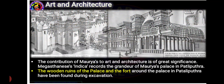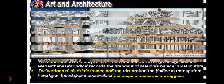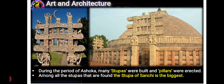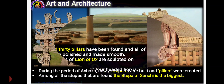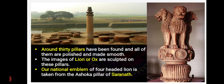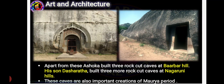Regarding art and architecture, wooden palaces and forts were built, and many stupas and pillars were erected. The stupa at Sanchi is the biggest one. Around 30 pillars have been found, with images of lions or oxen sculpted on them. Our national emblem of the four-headed lion is taken from the Ashoka pillar at Sarnath. Ashoka built three important rock-cut caves at Barabar Hills, and his son Dasharatha built three more rock-cut caves at Nagarjuni Hills.